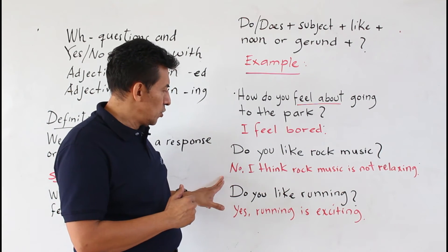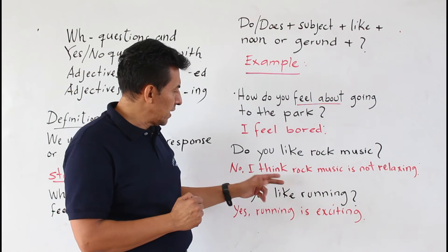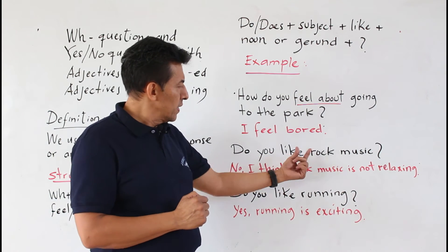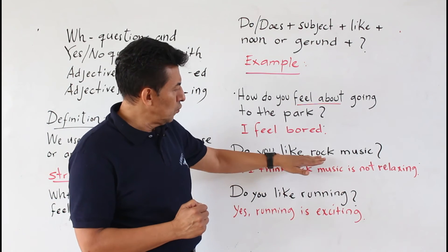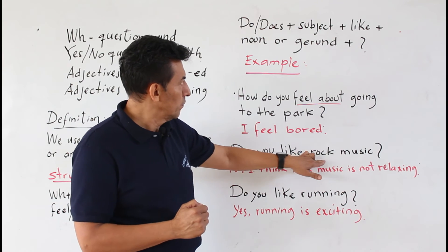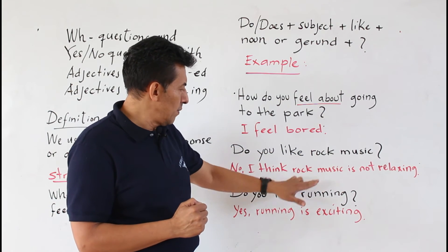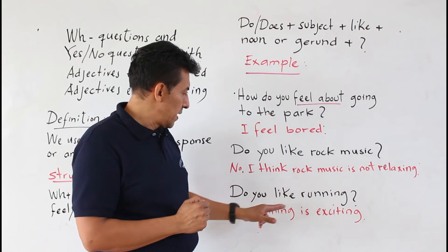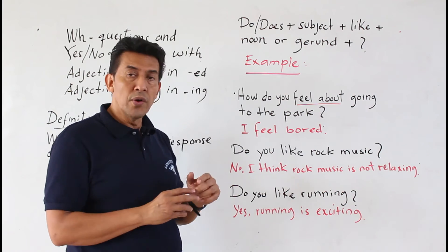En la siguiente, do you like running? Noten que en la primera, do you like, aquí estamos utilizando un noun, un noun. Y acá vamos a utilizar un -ing. En la segunda decía, do you like running?